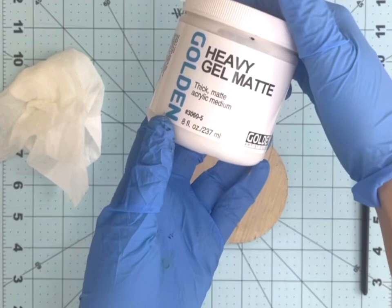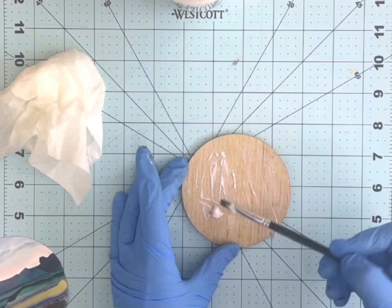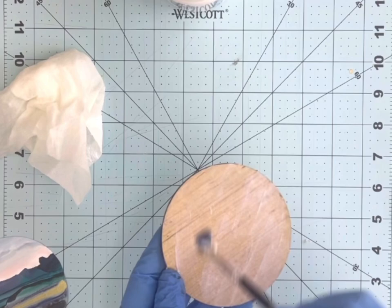Okay, so now we're ready to mount the Yupo paper to the wood disc ornament. I'm going to apply a heavy matte gel medium onto the disc, making sure to get an even application. You probably could use a bigger flat paint brush. This is just what I had available.